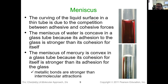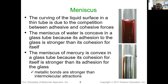The weaker the intermolecular forces, the further that meniscus is going to dip. But what if we had super strong intermolecular forces? Like mercury — the only liquid metal that is liquid at room temperature. Here, the cohesive forces are actually stronger than the adhesive forces at the wall. So instead of dipping, we get a positive divot that actually rises up above the adhesive forces — an inverted meniscus.